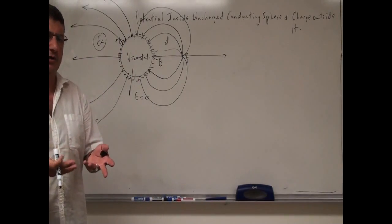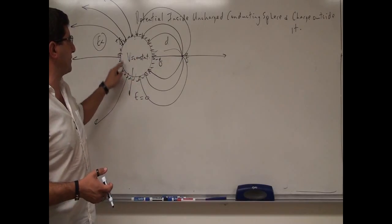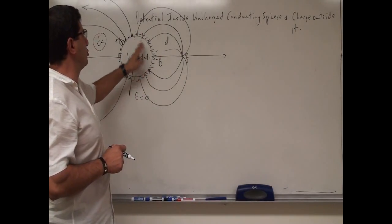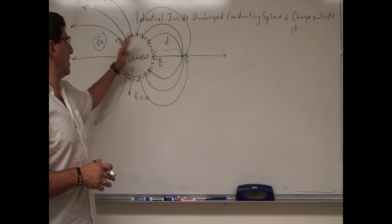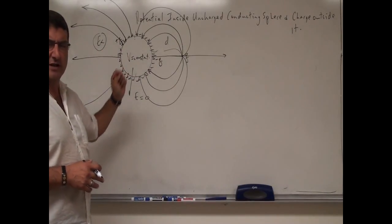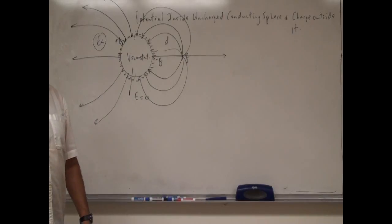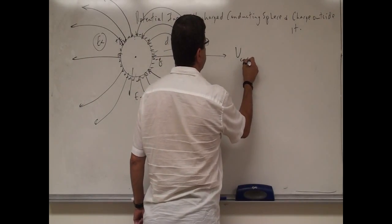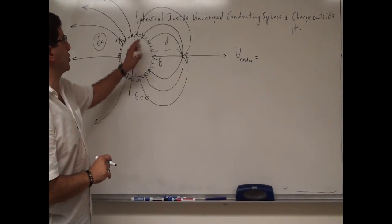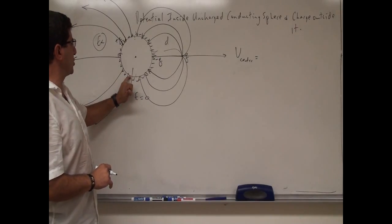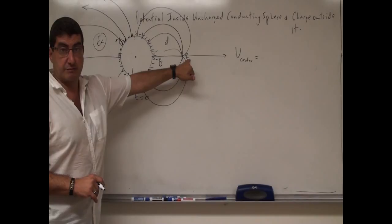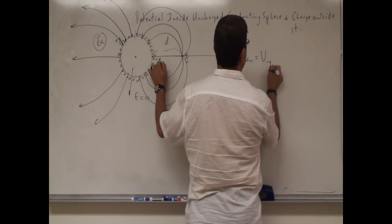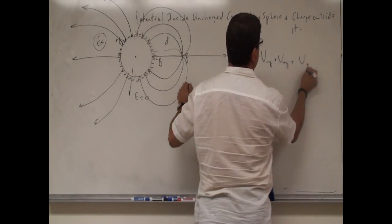Since the electric field is zero everywhere inside, the potential is constant throughout the conductor and its surface. But how do we calculate that potential? At first this looks like a difficult problem because you don't know the charge distribution — you don't know how the negative Q is distributed on one side or how the positive Q is distributed on the other side. The potential at the center equals the potential due to the negative Q, plus the potential due to the positive Q, plus the potential due to the outside point charge.